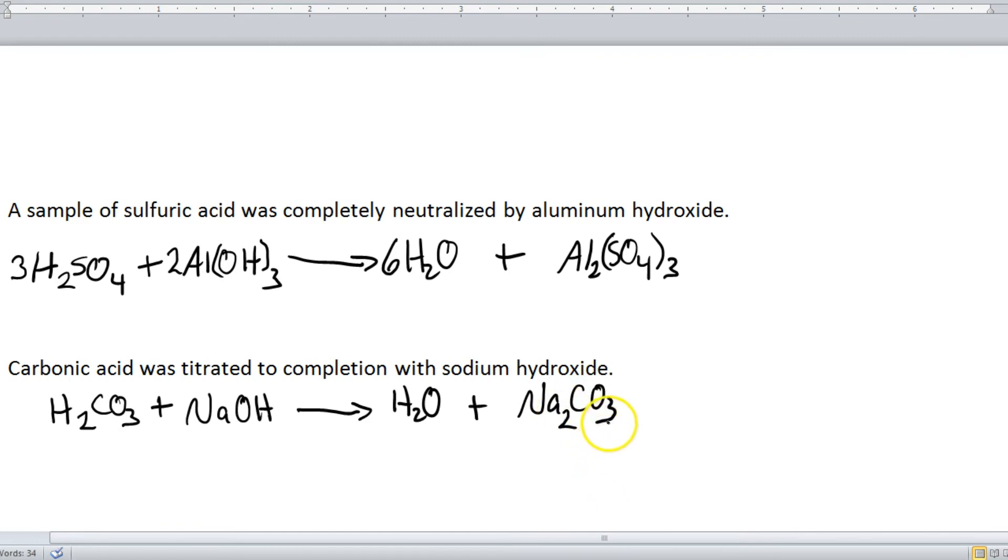Alright, and now we're going to balance our equation. Start with the non-water product. So we have two sodiums here, only one there, so I'm going to put a two in front. One carbonate, one carbonate, so we're good there. And now, I'm going to look at the number of oxygens in hydroxide, which in this case is two, and that is the number of waters.